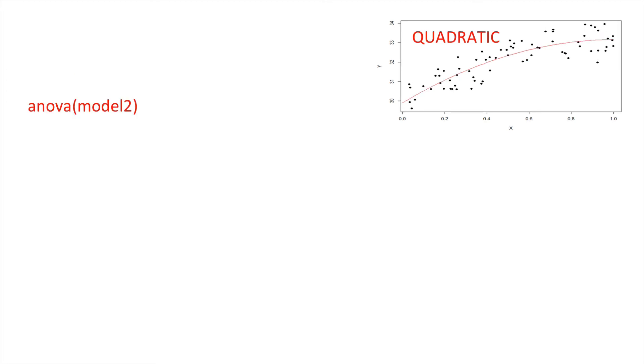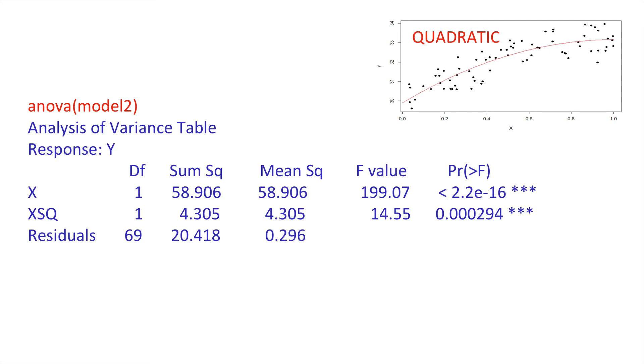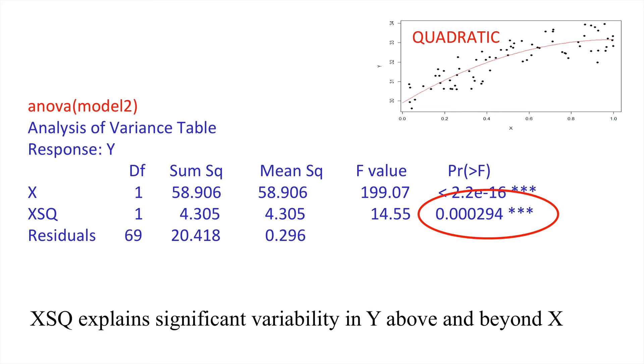Now, let's have a look at the more complicated quadratic model that we fitted. Here, I'm asking for the analysis of variance breakdown with model 2. This is with a type 1 sum of squares by default. And here what we can see is, first of all, x explains significant variability in y. But then also, x squared explains significant variability in y above and beyond that explained by x. So, that justifies the extra term, the x squared term in that model. In effect, it's taken some of the curvature in that relationship.